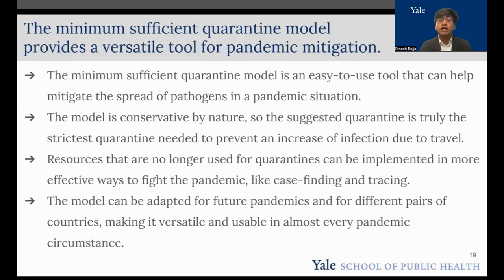This model represents a versatile tool for pandemic mitigation, not only for COVID, but for future pandemics as well. This model is very conservative, so the suggested quarantine is truly the strictest quarantine needed to prevent an increase of infection due to travel. Leftover resources that are no longer needed for quarantines can be used in more effective ways, like case-finding and tracing. The versatility of this model for future pandemics and for different pairs of countries makes it an optimal tool for pandemic mitigation, no matter what the case.